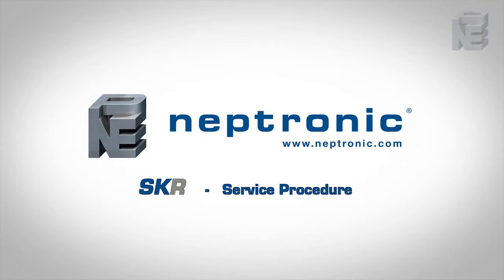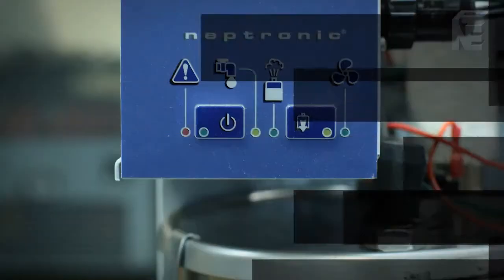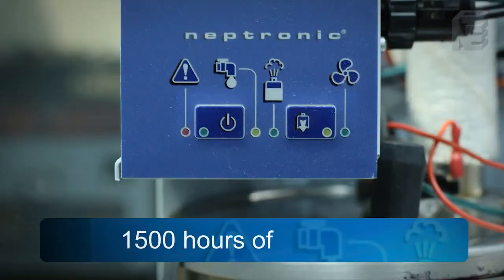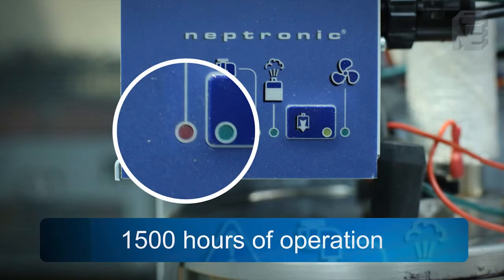SKR service procedure. When the humidifier reaches 1,500 hours of operation, the red LED alarm indicator will blink on-off continually, letting you be aware that the unit should be serviced soon.